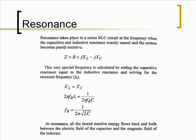Resonance takes place in a series RLC circuit at the frequency when the capacitive and inductive reactance exactly cancel and the system becomes purely resistive. This is a very special frequency. It is calculated by setting the capacitive reactance equal to the inductive reactance and solving for the resonant frequency, FR.